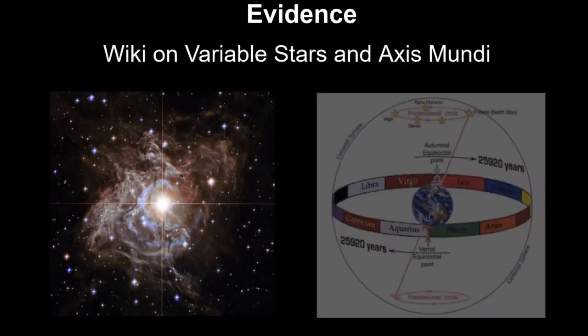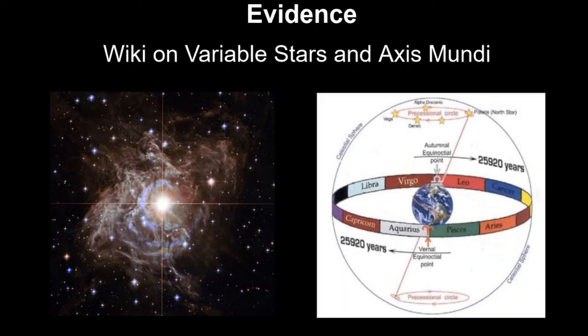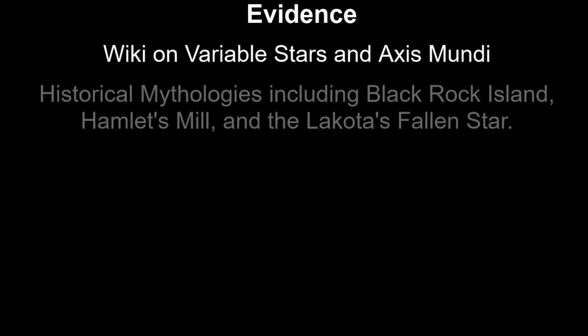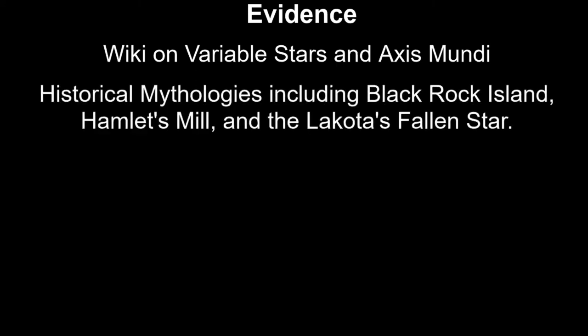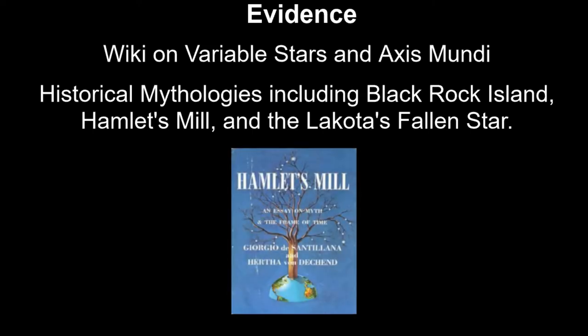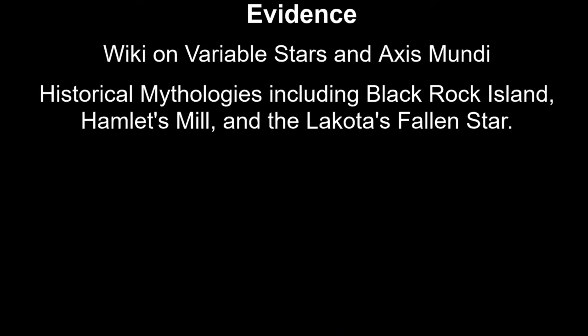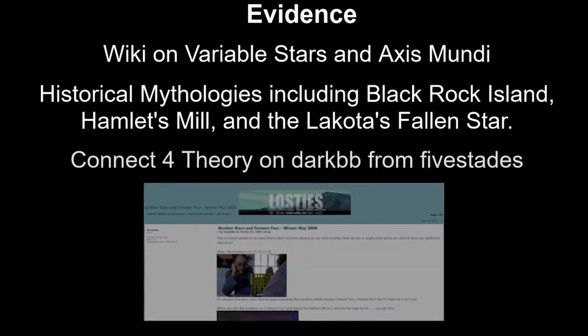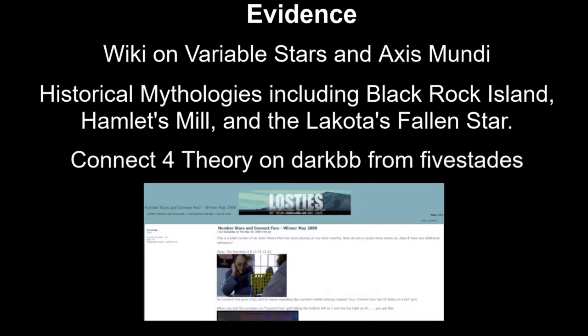Wikipedia articles about variable stars and the Axis Mundi itself. Connected stories such as Black Rock Island, Hamlet's Mill, and the Native American legend Fallen Star. There's also a Connect Four theory from five states. All links will be in the description.